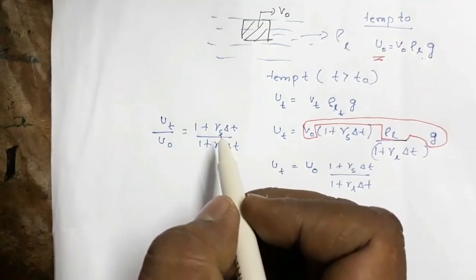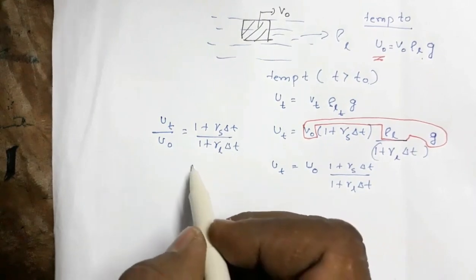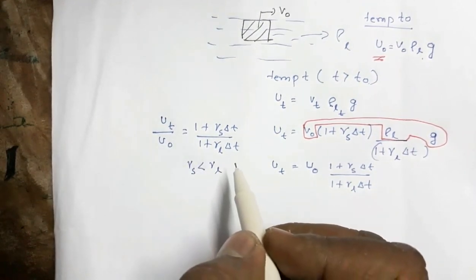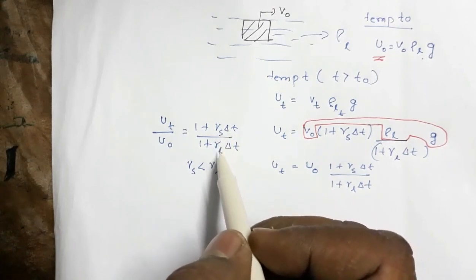Now γS is the coefficient of volume expansion of solid, γL is the coefficient of volume expansion of the liquid. Now obviously γS is less than γL. Coefficient of expansion of solid will be far less than coefficient of expansion of liquid.